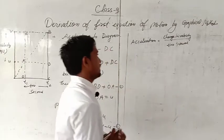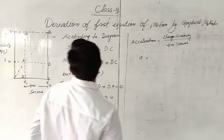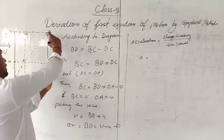So acceleration we denote as A. Change in velocity is happening at this point, BD.